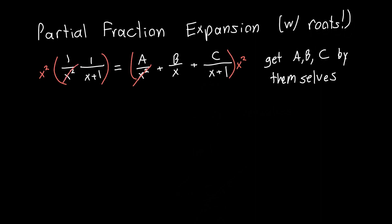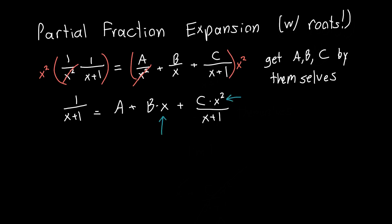Once we multiply by x squared, the x squared cancels on A and on the other terms. We end up with 1 over x plus 1 equals A, plus B times x, plus C times x squared over x plus 1. Now we can just take the limit as x approaches 0 — or essentially just plug in x equals 0. The B and C terms cancel out and we're left with 1 over 0 plus 1, which is 1. So A equals 1.